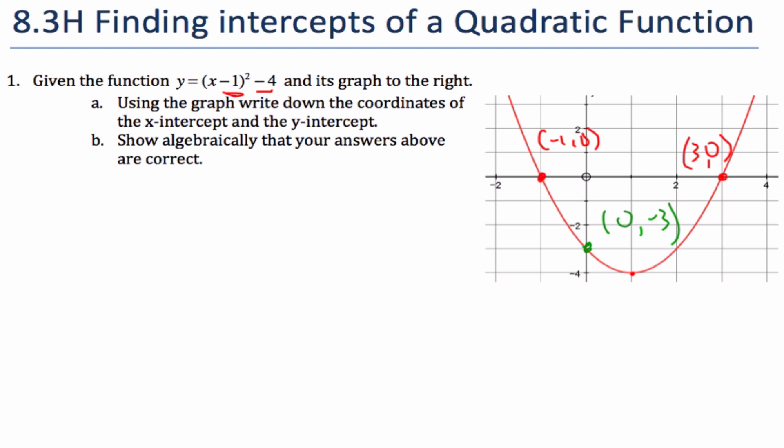That's part A done. Part B asks to show algebraically that your answers are correct. So if I want to find my x-intercepts, what I always do is I force the equation to make y equal 0. And so I get 0 is equal to (x - 1)² - 4.